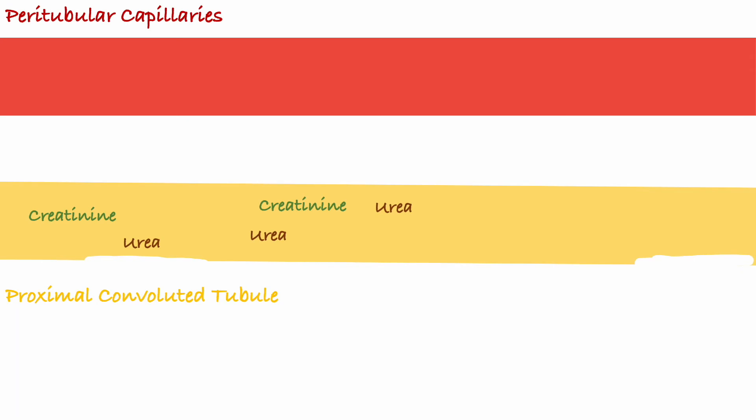So with intrarenal failure our tubular structure is not maintained. And because of that the kidneys lose their ability to absorb urea as they normally do and secrete creatinine as they normally do. So our creatinine levels will rise in the blood because we cannot filter creatinine as well into the urine.